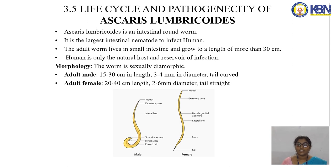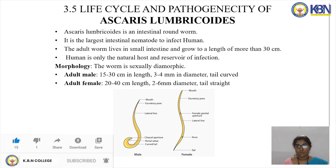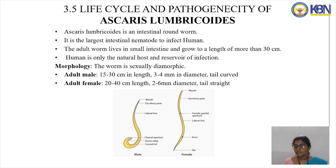Let us discuss the life cycle and pathogenicity of Ascaris lumbricoides. Ascaris lumbricoides is an intestinal roundworm and the large intestinal nematode to infect humans. The adult worm lives in the small intestine and grows to a length of more than 30 centimeters. Humans are the only natural host. The structure is present mainly in the human intestine.